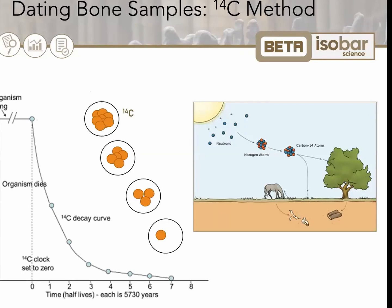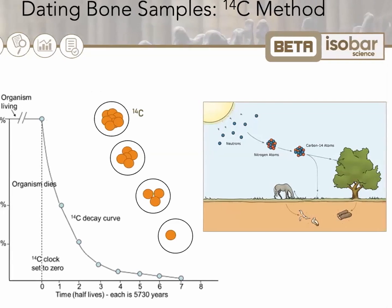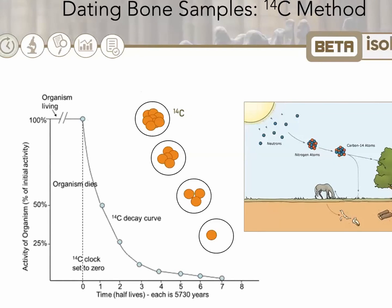Now once a plant or animal dies, it ceases to acquire 14C. Rather, the 14C within its biological material at the time will continue to decay. As a result, the ratio of 14C to 12C in its remains will gradually decrease. Because 14C decays at a known rate, the proportion of 14C can be used to determine how long it's been since a given sample stopped exchanging carbon — with the older the sample, the less 14C that will be left.